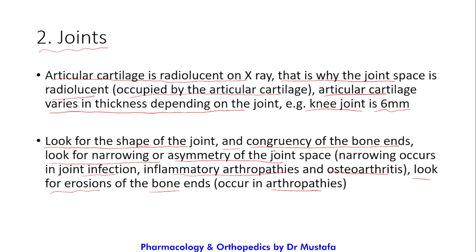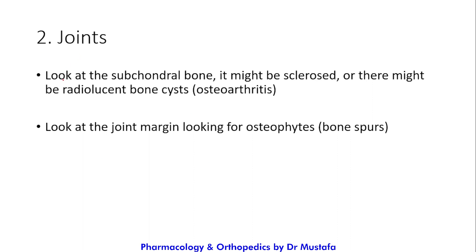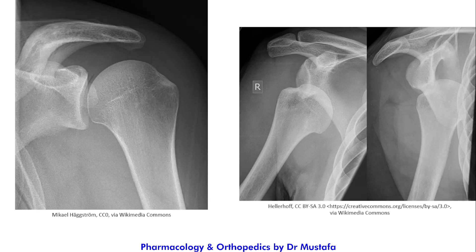Look at the shape, congruency, any narrowing or asymmetry, and erosions. Also assess the subchondral bone — it may show sclerosis or radiolucent bone cysts, both of which are present in osteoarthritis. Look at the joint margins for osteophytes (bone spurs), which are also a manifestation of osteoarthritis.